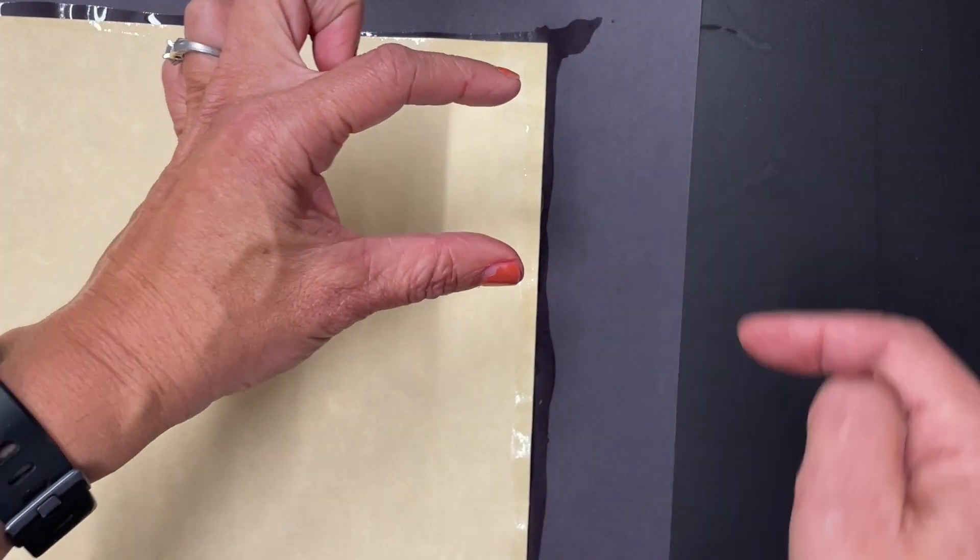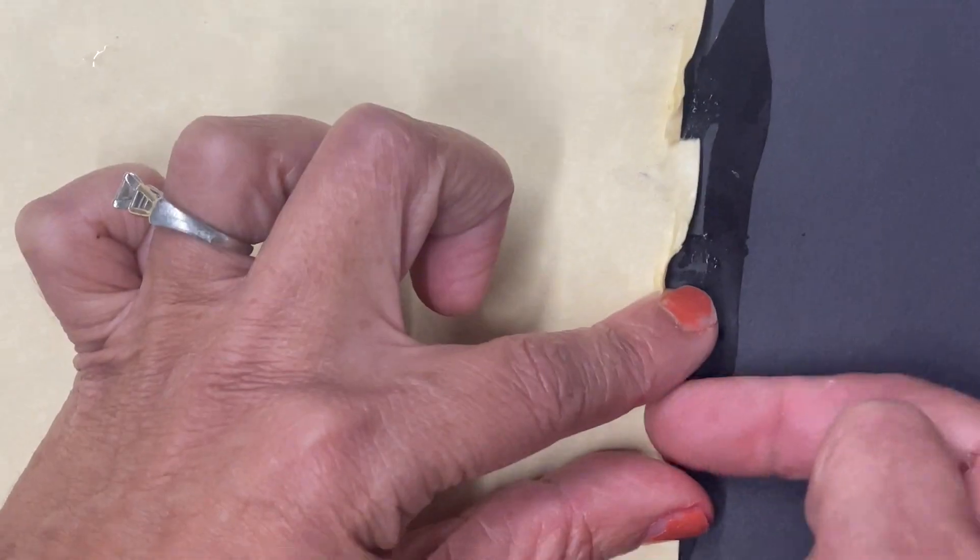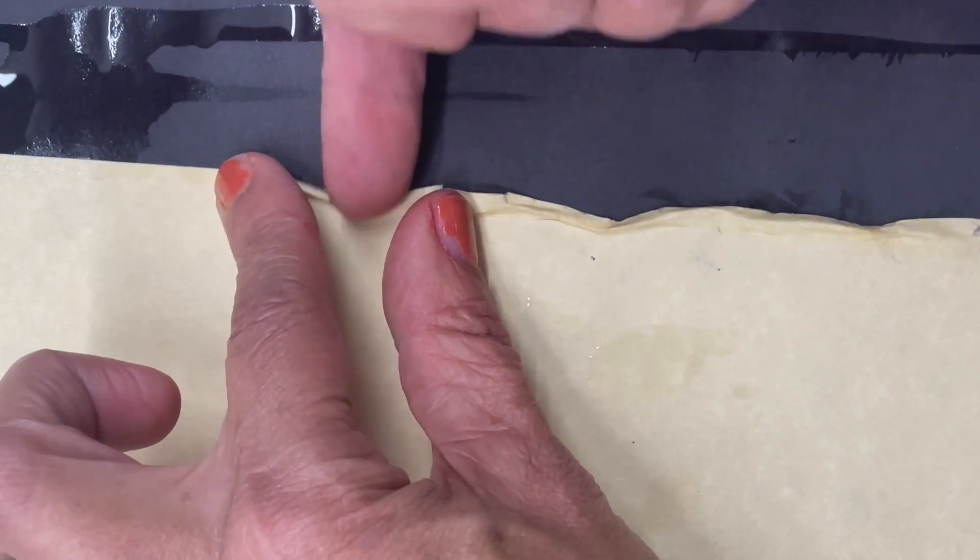So when you're done, you're going to use a crimping method. I use my non-dominant hand, my index finger and thumb, to hold down the paper while I use my index finger on the other hand to gently push in the paper. And I alternate.